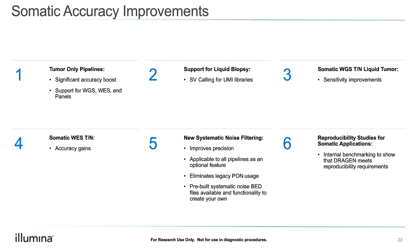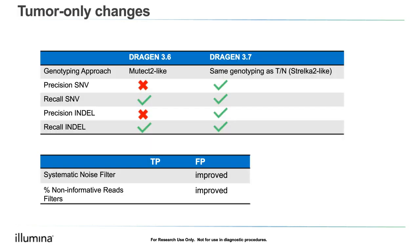Comparing 3.6 to 3.7: the genotyping approach in 3.6 was more like Mutect2, but in 3.7 we are gaining from the team that worked on Strelka to improve genotyping. We also ported improvements from tumor-normal analysis over to the tumor-only space — something we had not done in previous releases. With improvements to noise filtering and how we treat non-informative reads, we see significant improvement in our false positive detection.